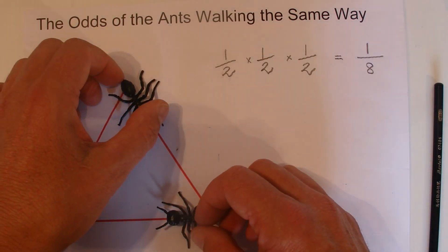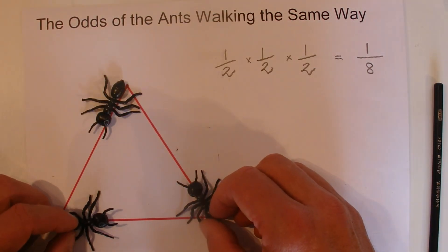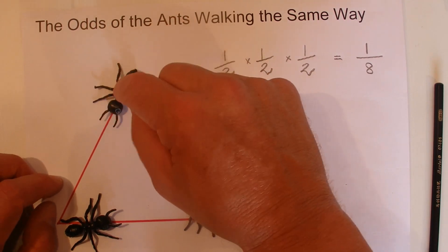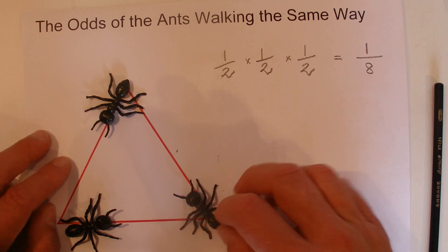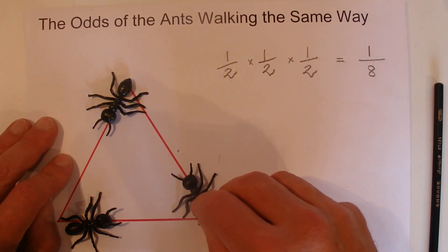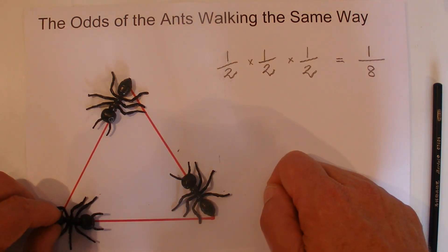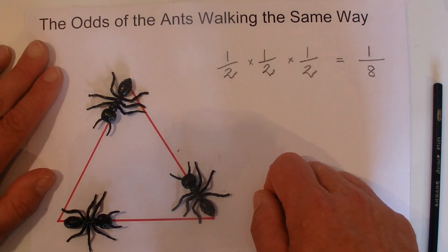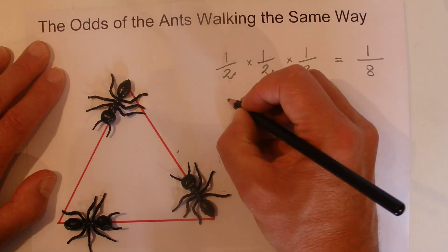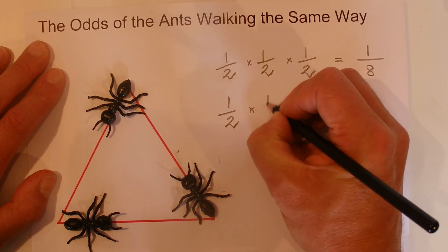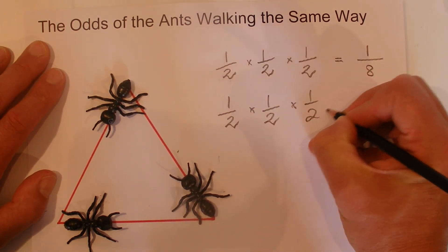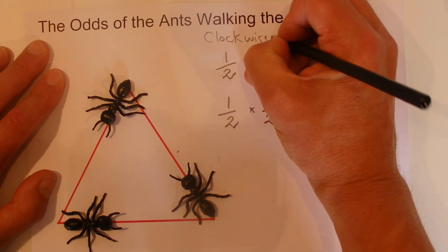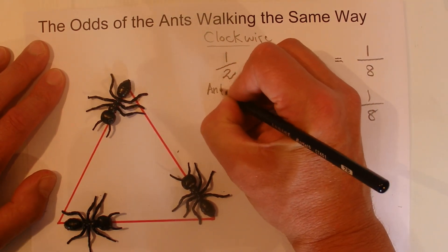But the ants could also decide to move anti-clockwise or counterclockwise around the triangle. In that case, there's also a one in two chance that this ant will go in that direction, counterclockwise. This ant also has a one in two chance of heading up that way, anti-clockwise. And this third ant also has a one in two chance of heading around the triangle counterclockwise.